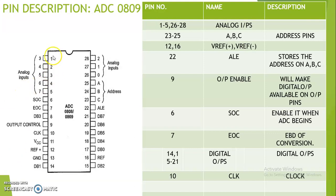Pin numbers 1, 2, 3, 4, 5 and pin numbers 26, 27, 28 are all analog input pins, designated as Input 0 to Input 7. In total, there are 8 analog inputs on this IC. We can connect signals coming from 8 different transducers to these inputs. Each one of these inputs will be converted to an 8-bit equivalent digital output.